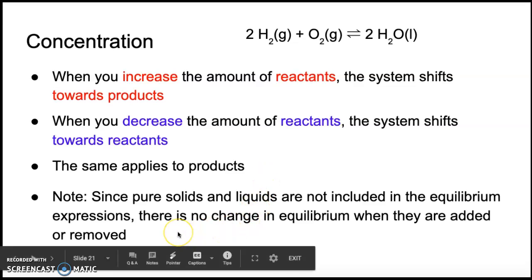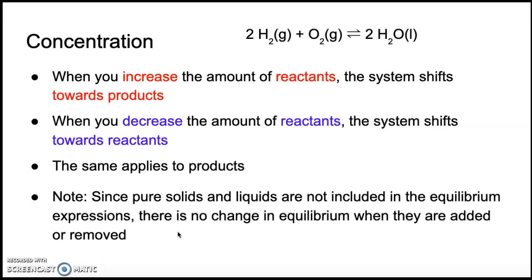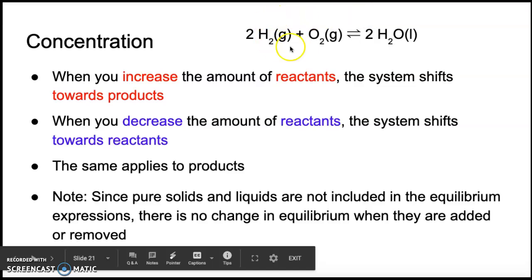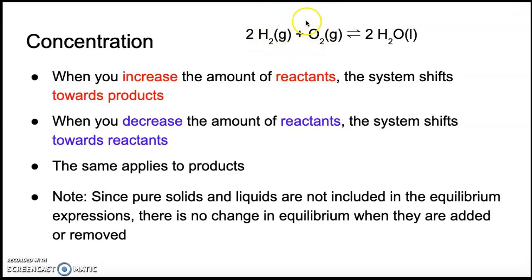We have to be careful and note that since solids and liquids are not included in the equilibrium expression, there will be no change in equilibrium when they are added or removed. Looking at this reaction, adding or taking away hydrogen or oxygen gases will affect the equilibrium because they're both gases. However, if we look at the water on the product side, we notice it's a liquid. So you could add more and more water and nothing would happen — it wouldn't shift back towards the reactants. You could take away water and it wouldn't matter. This only works — like all things in equilibrium — if we're talking about a gas or an aqueous solution.